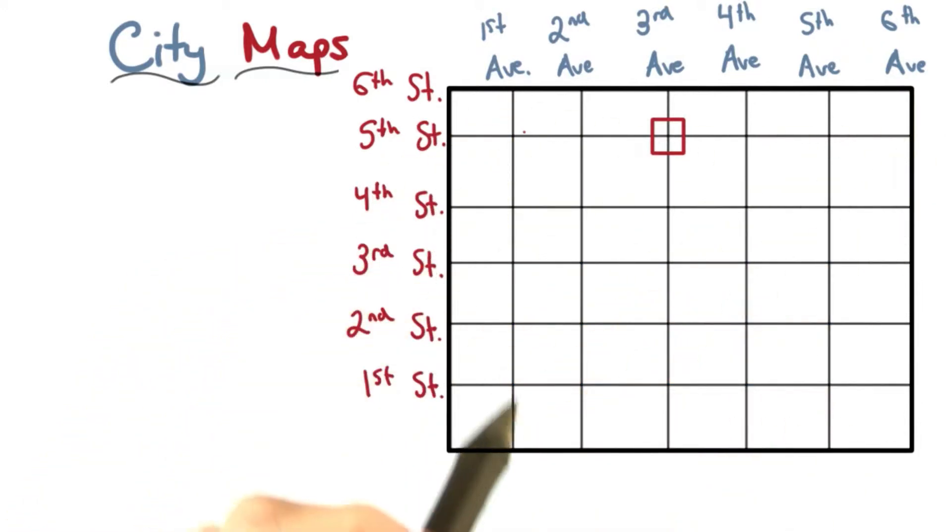The avenues are the same, but the avenues run north-south. 1st Avenue, 2nd Avenue, and so on.